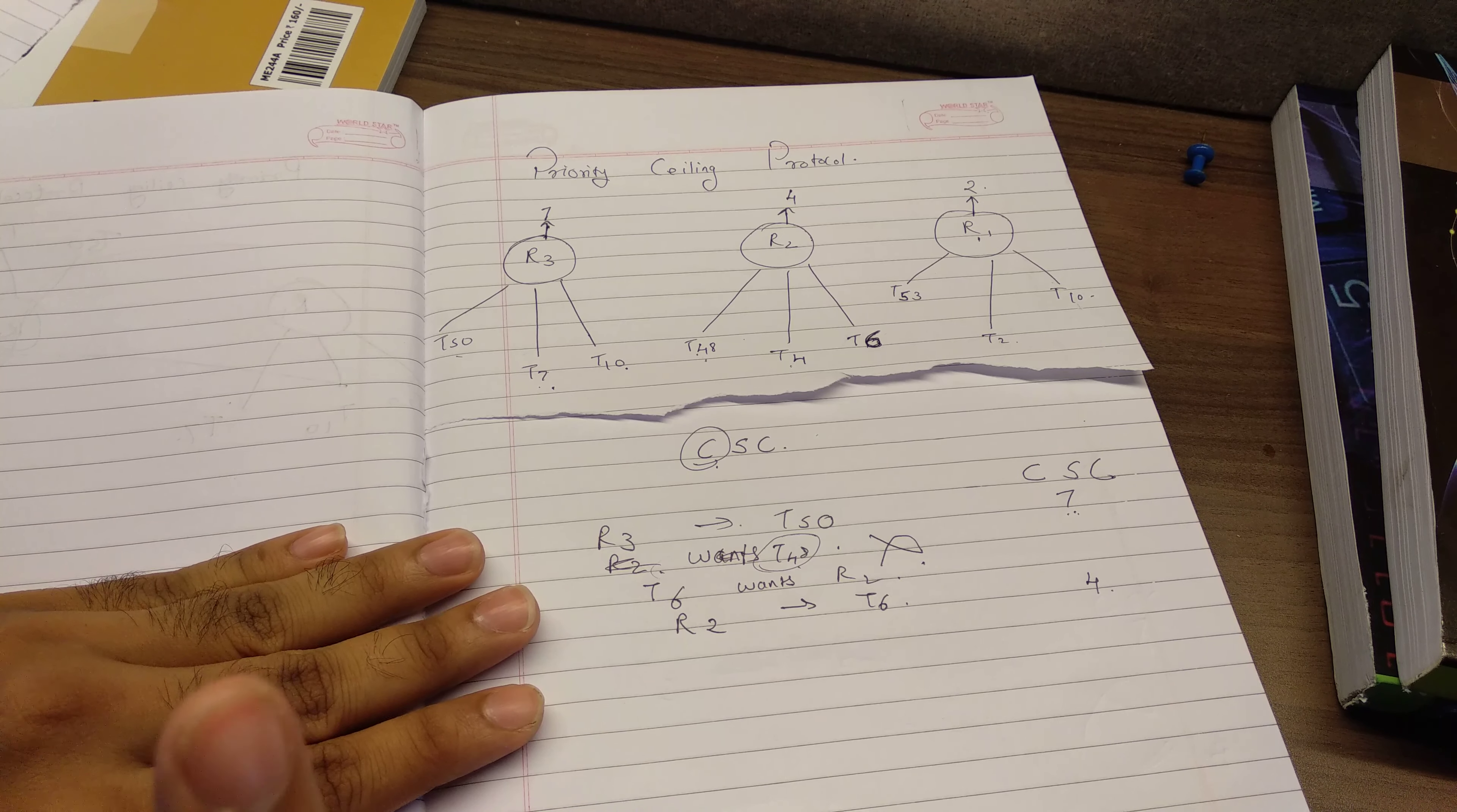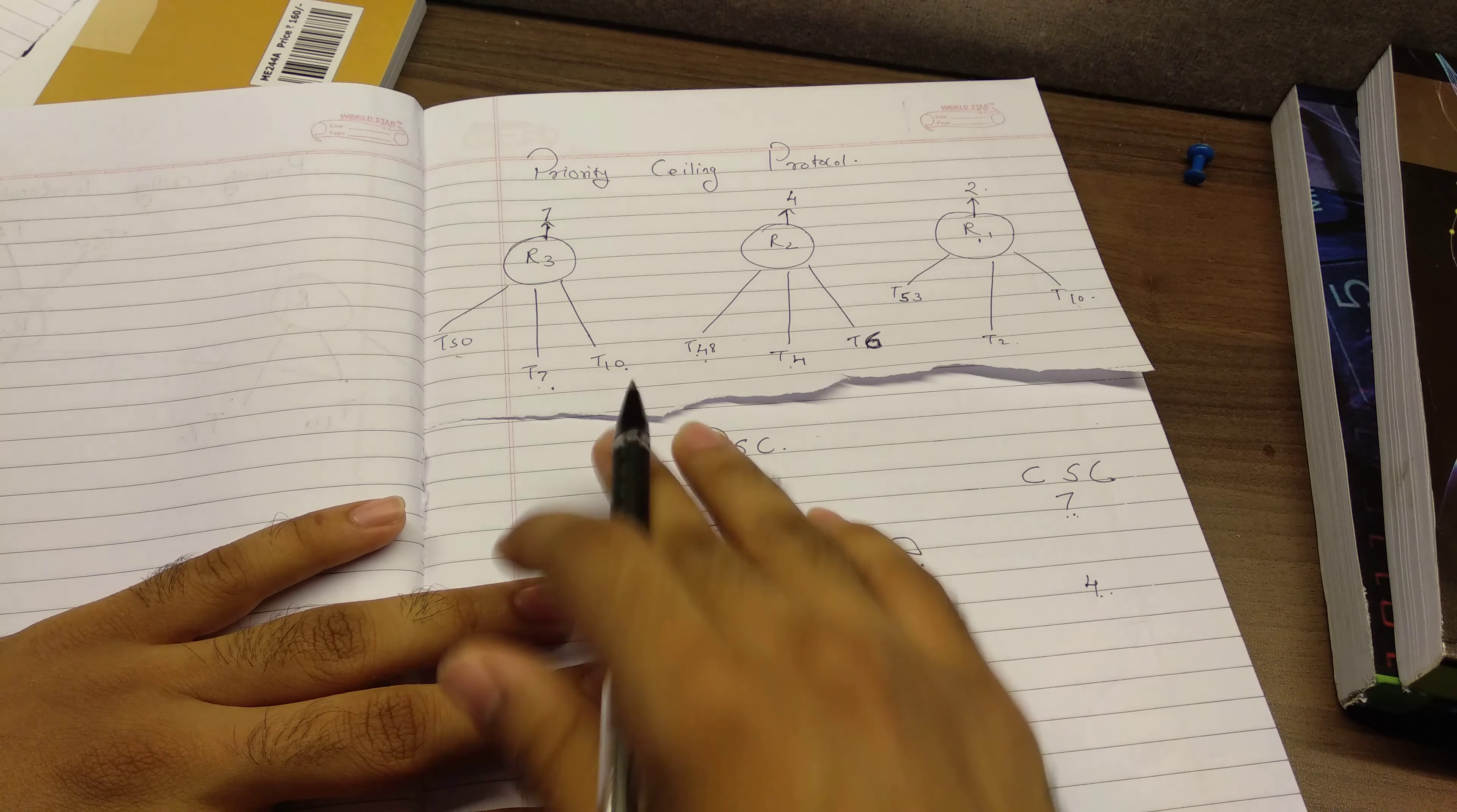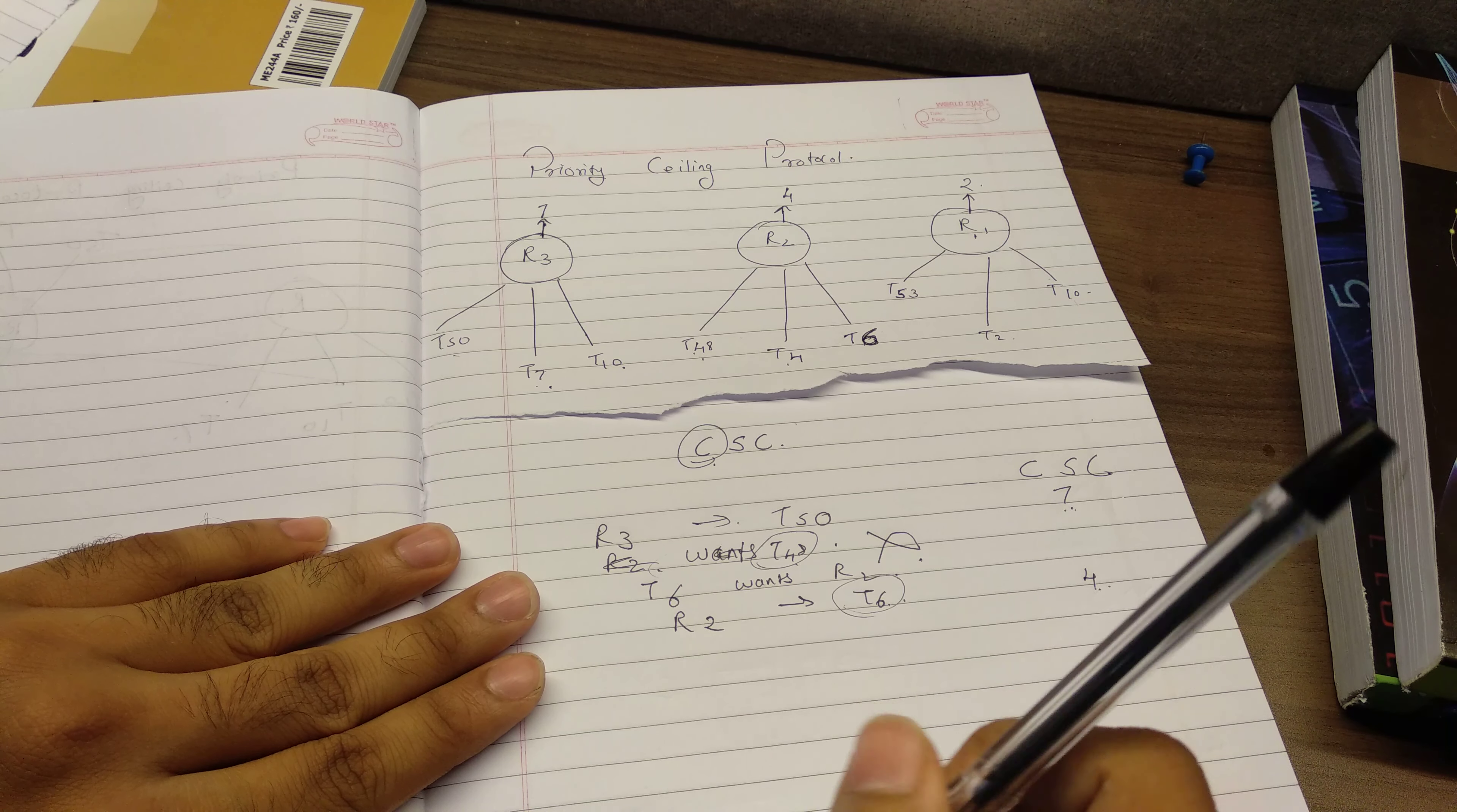But there is one small condition, any task that is holding the current system ceiling will be granted any other resources that it requires. So for example, T6 is holding a CSC that is 4. And if it requests for another resource, for example, if R1 was also taken by T6, so if it asks for R1, it will be granted R1. If it asks for R3, it will be granted R3, provided it is not in use. So if any task is holding the current system ceiling right now, it will be granted the other resource. That is just an exception over there.